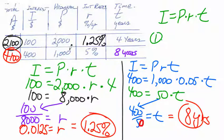So eight years, five percent, a thousand dollars, four hundred dollars of interest — you now have one thousand four hundred dollars total. Not forty-one hundred — one thousand four hundred.